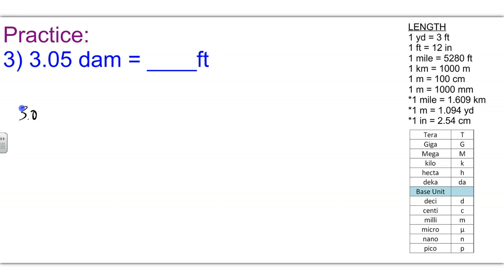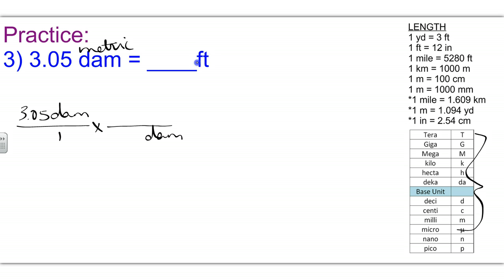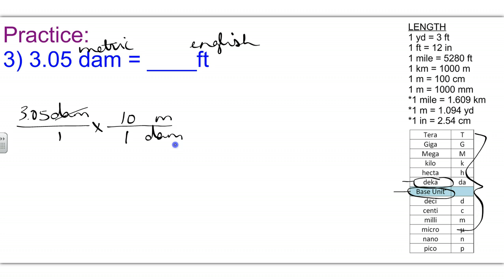Number three: 3.05 decameters over 1. Times, draw a line, bring down decameters. Notice this time we are starting with the metric system and going to end on the English system. From decameter — here's deca — since this is the metric system, you always want to go to the base, so we're going to go to meter. Between decameter and meter, decameter is larger so it gets a 1, and there's only one step from the base to decameter, so that's a count of 10. Decameters have canceled. Now that I'm at meter, bring down meter. Meter happens to be a unit I can use to convert from metric to English. You had your choice between centimeter, meter, and kilometer, but we went with meter since it's at the base already.